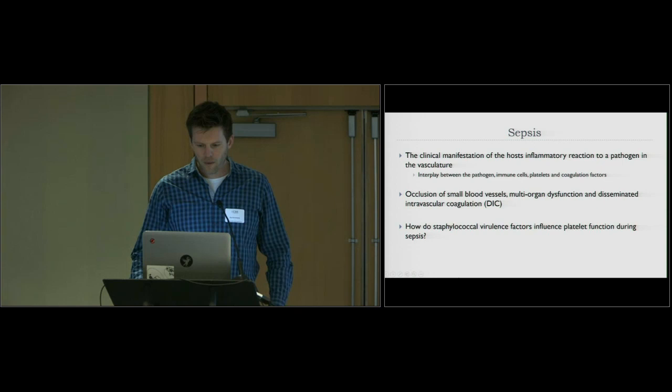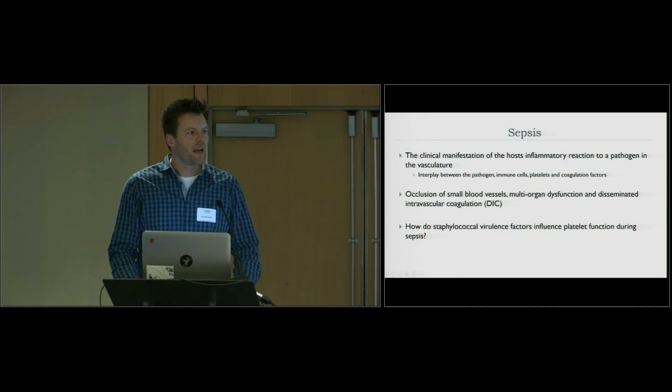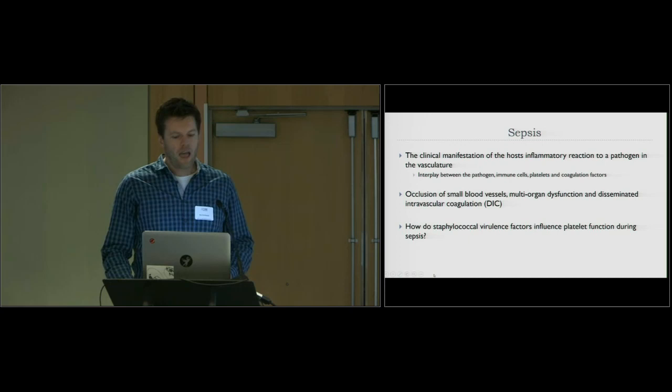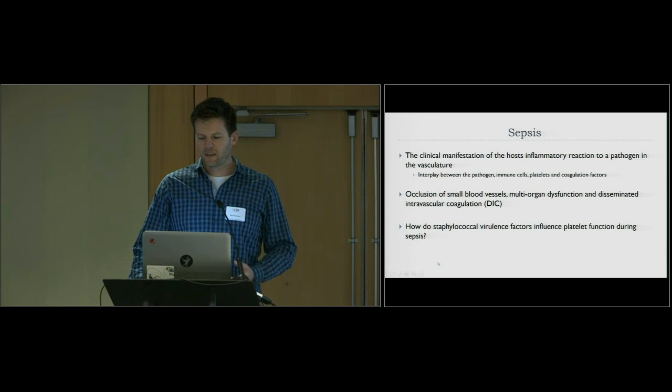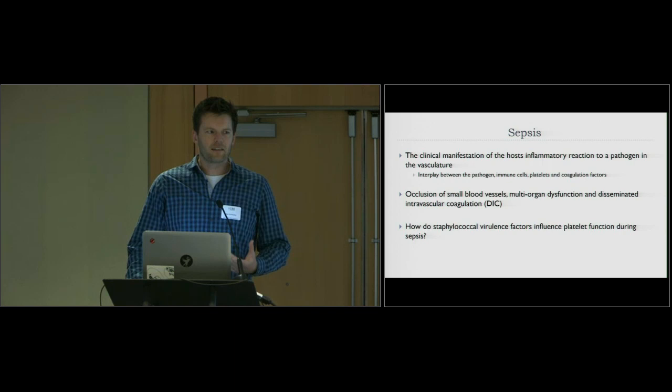Sepsis is really the clinical manifestation of an overt inflammatory reaction to a pathogen in the vasculature. What really happens is that it's an interplay between the pathogen, immune cells and components of the hemostatic system, such as platelets and coagulation factors. You typically see occlusion of small blood vessels throughout the body and organs, which can lead to multi-organ dysfunction and, in the worst case, disseminated intravascular coagulation or DIC. But what is not really well known is how some pathogens influence this course of sepsis.